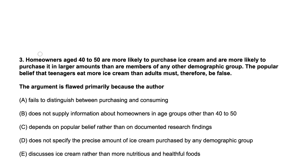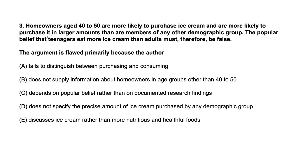Okay, let's look at number three. Homeowners aged 40 to 50 are more likely to purchase ice cream and more likely to purchase it in larger amounts than are members of any other demographic group. The popular belief that teenagers eat more ice cream than adults must therefore be false. This is the conclusion. The argument is flawed because the author — what? So we're looking to figure out why this conclusion is wrong. They're saying that 40- to 50-year-olds are likely to purchase ice cream in larger amounts than any other group, and therefore teenagers must not be eating more ice cream.